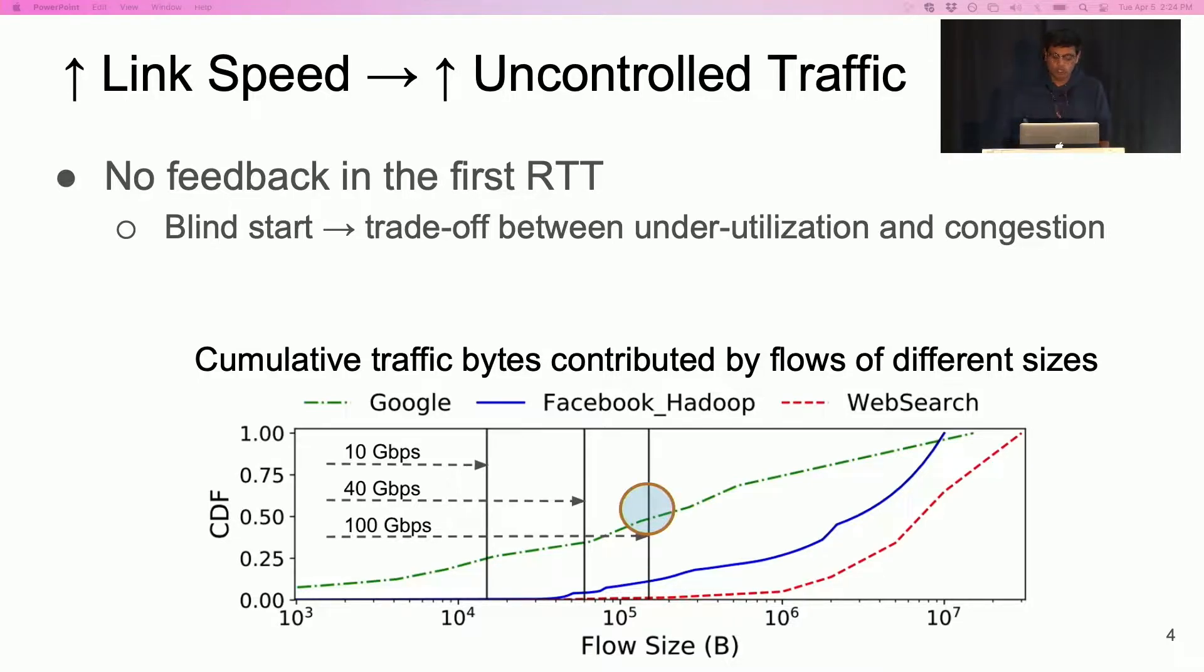For the Google workload, more than 45% of the traffic is contributed by flows less than a BDP on the 100 Gbps network. More uncontrolled traffic means that the switch can run out of buffers more frequently, incurring packet drops that can degrade performance.